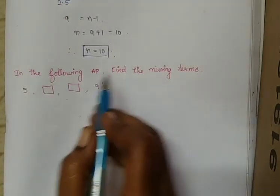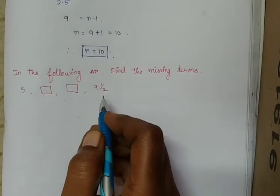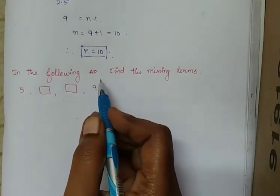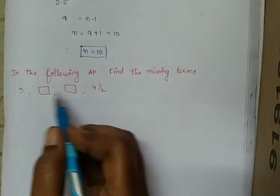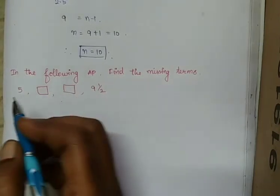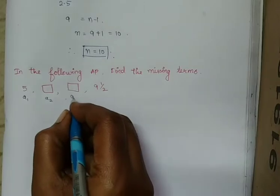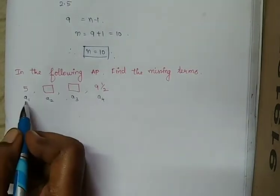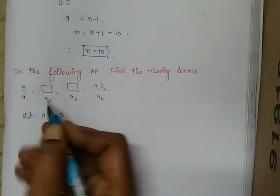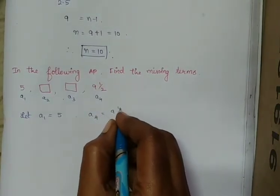The next question: find the missing terms in the AP: 5, _, _, 9½. Since this is an AP, the common difference is equal between terms. Taking A1 = 5, A2 unknown, A3 unknown, and A4 = 9½. We know A2 = A1 + D and A3 = A2 + D. We need D first. Using A4 = A + (4−1)D = A + 3D, and A4 = 9½, so 5 + 3D = 9½.